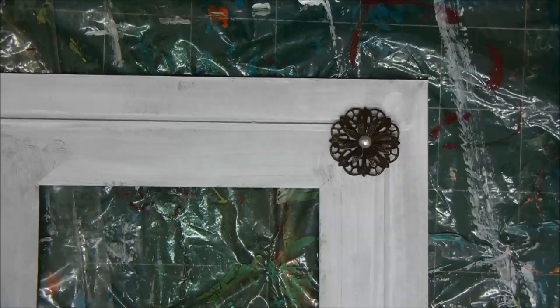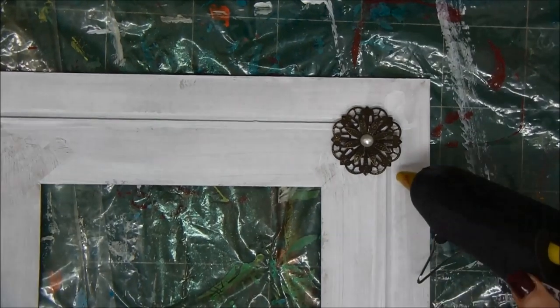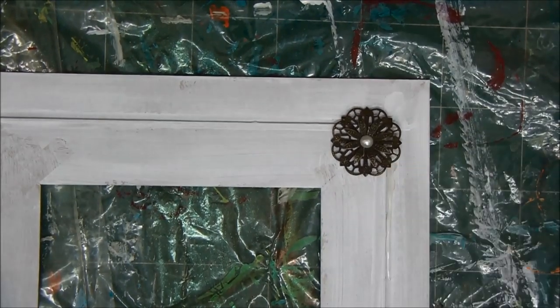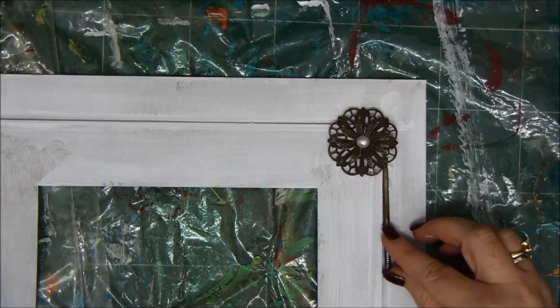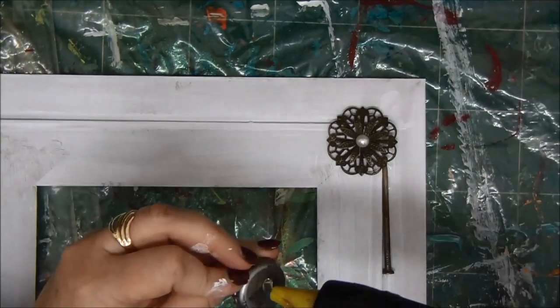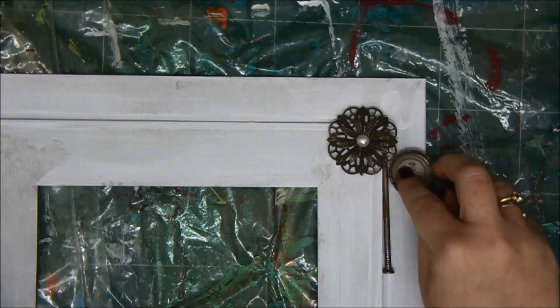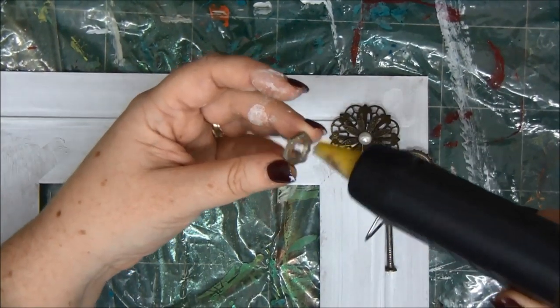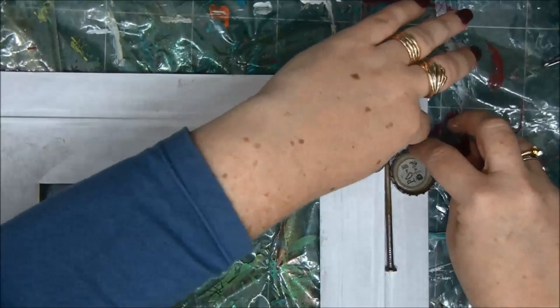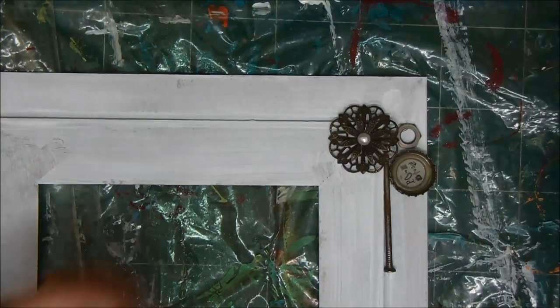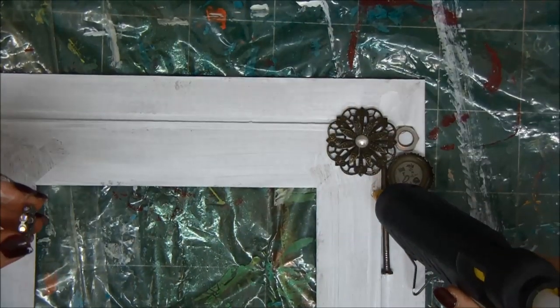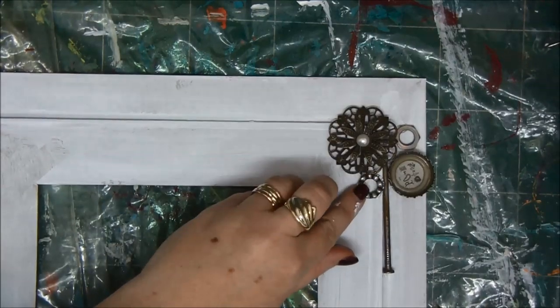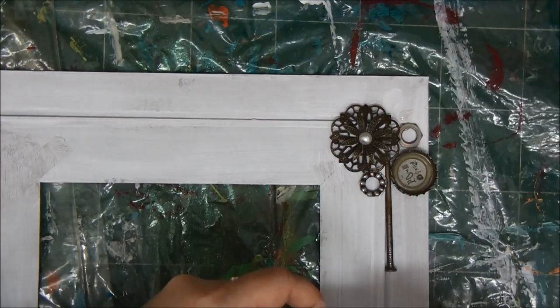Some embellishments I get from Michael's or from other craft stores. This is a really long nail from my husband. An old bottle cap. All kinds of stuff like that. The most important thing is to use different things because they have different texture and different appearance, and they will look nicer once we cover them with gesso.